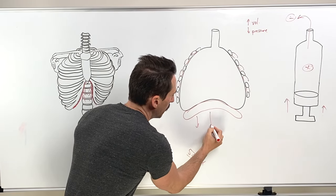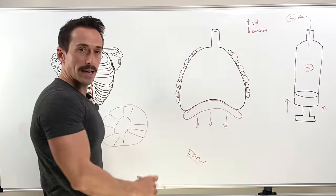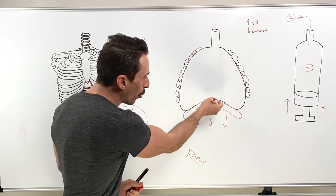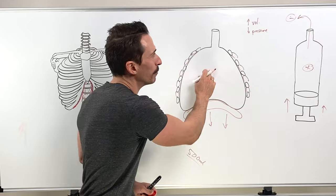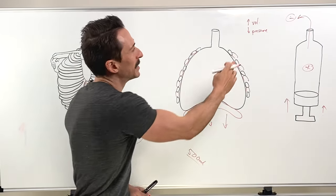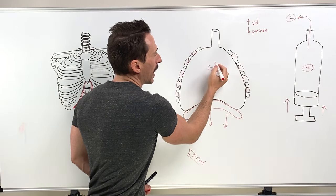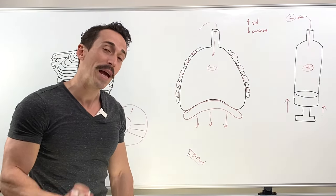And what happens is the diaphragm goes from a dome shape to being flattened out. And that's what's happening here. So you can see the diaphragm, it flattens out. What does this do? It pulls down on the thoracic cavity. It's increasing the volume of the thoracic cavity, decreasing the pressure and a little bit of air rushes in.